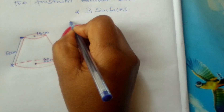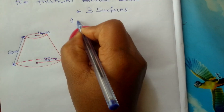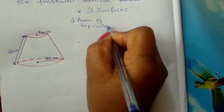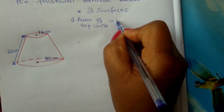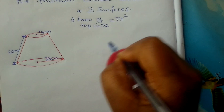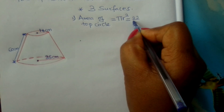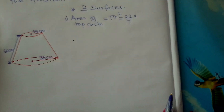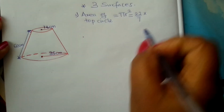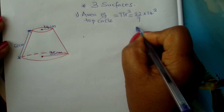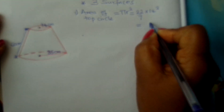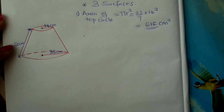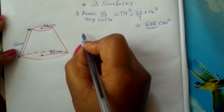Number one: what is the area of the top circle? The area of a circle is given by π r squared. Therefore this will be 22 over 7 times 14 squared. You work this out using a calculator and you should get 616 centimeters squared. That is the area of the top circle.